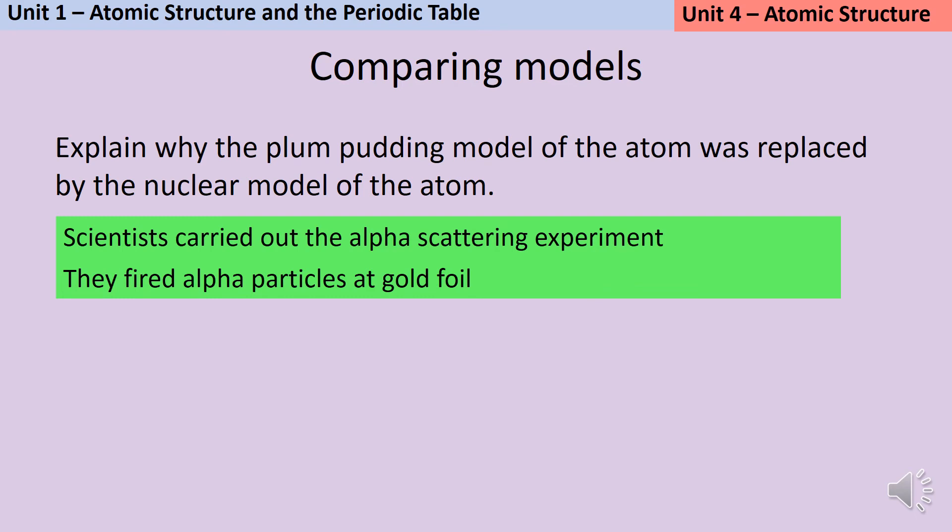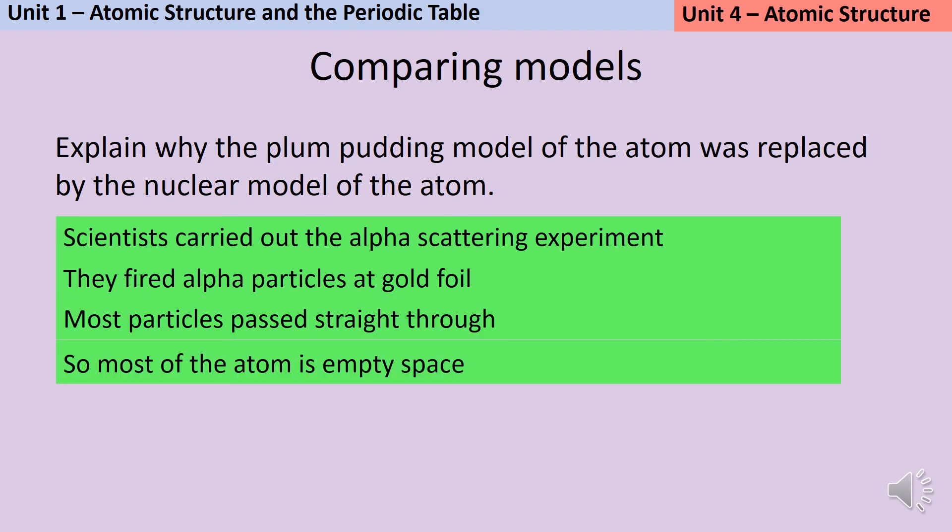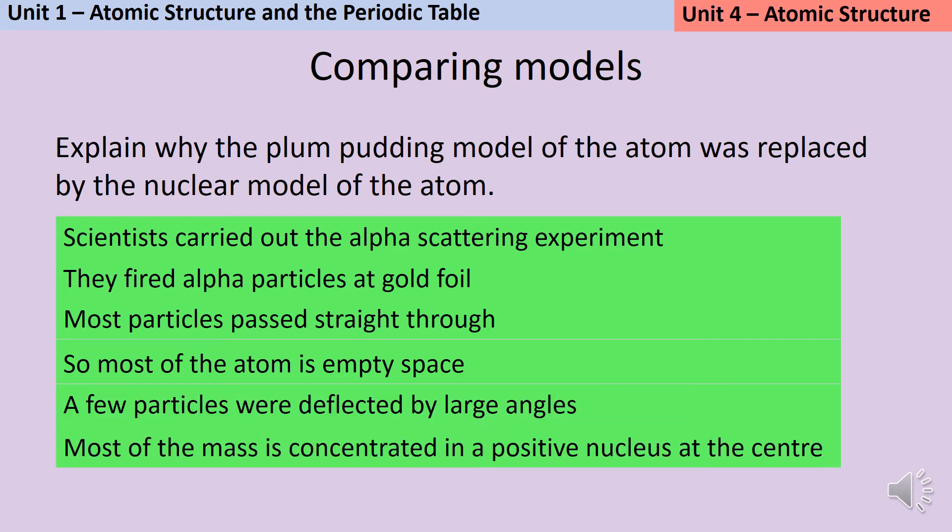First, you should name the experiment—the alpha scattering experiment. Then explain what that is: scientists fired alpha particles at gold foil. Now we need the two observations and conclusions. Most particles passed straight through, which showed that most of the atom was empty space. Some were deflected by large angles, which was evidence that most of the mass was concentrated in a positive nucleus. Finally, why did that lead them to throw out the plum pudding model? Because the plum pudding model had the mass and charge spread throughout the atom. It wasn't mainly empty space and didn't have a nucleus.